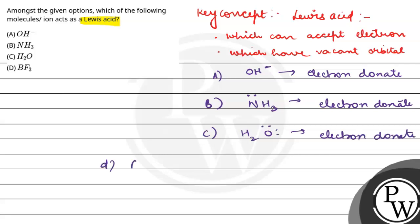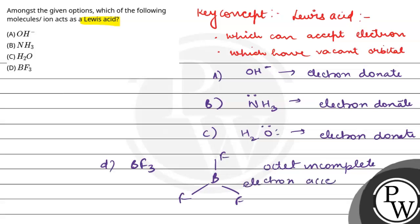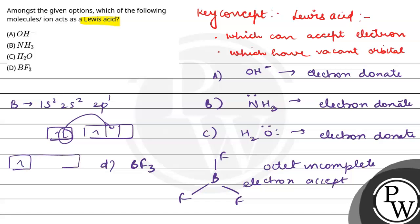Now, last is BF3. If we look at the structure of BF3, the octet is not complete — the octet is incomplete. The boron configuration is 1s2, 2s2, 2p1. So the outer configuration is 2s2, 2p1. With three fluorine atoms bonded, BF3 has a vacant orbital and can accept electrons.